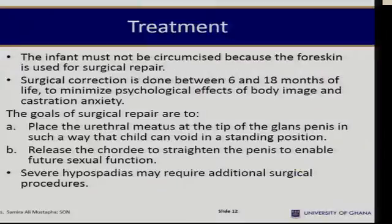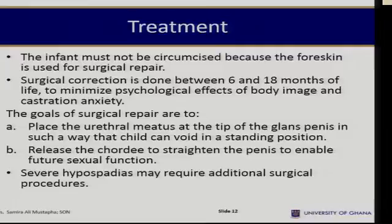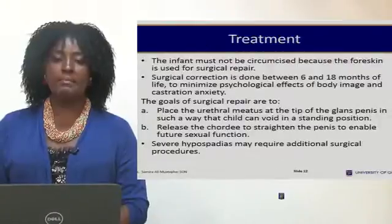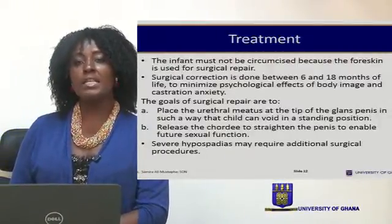Treatment: The infant cannot be circumcised because the foreskin is needed for the repair. Surgical correction is done between 6 to 18 months of life to minimize psychological effects of body image and castration anxiety. The goal of surgical repair is to reposition the urethral meatus so that the child can void in a standing position, and to release the chordae to straighten the penis and enable future sexual function.